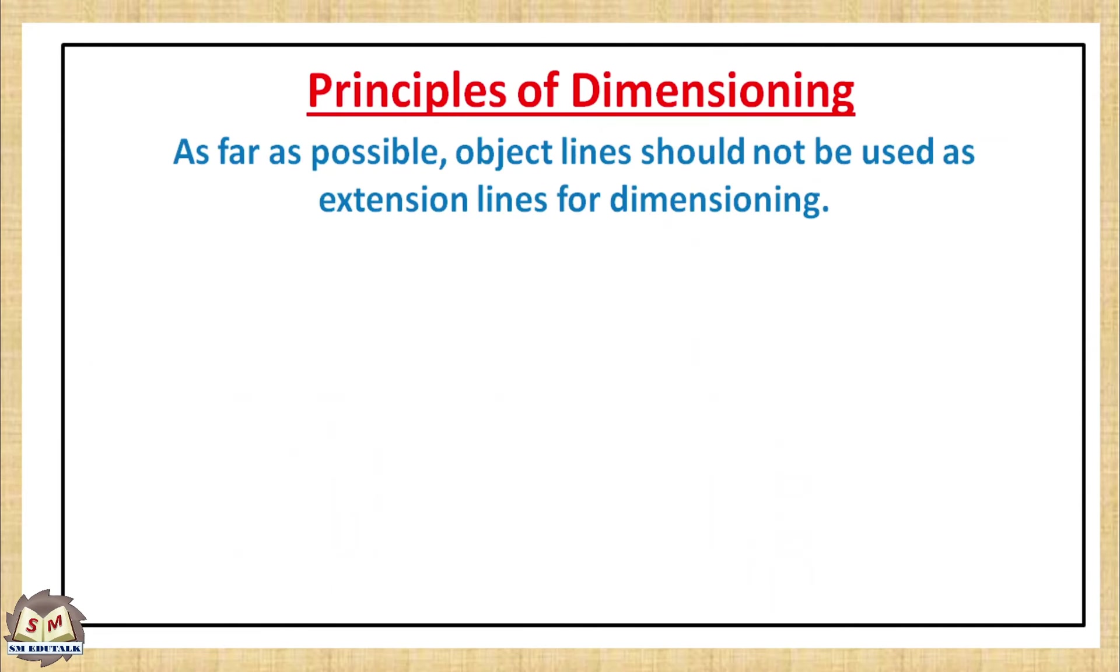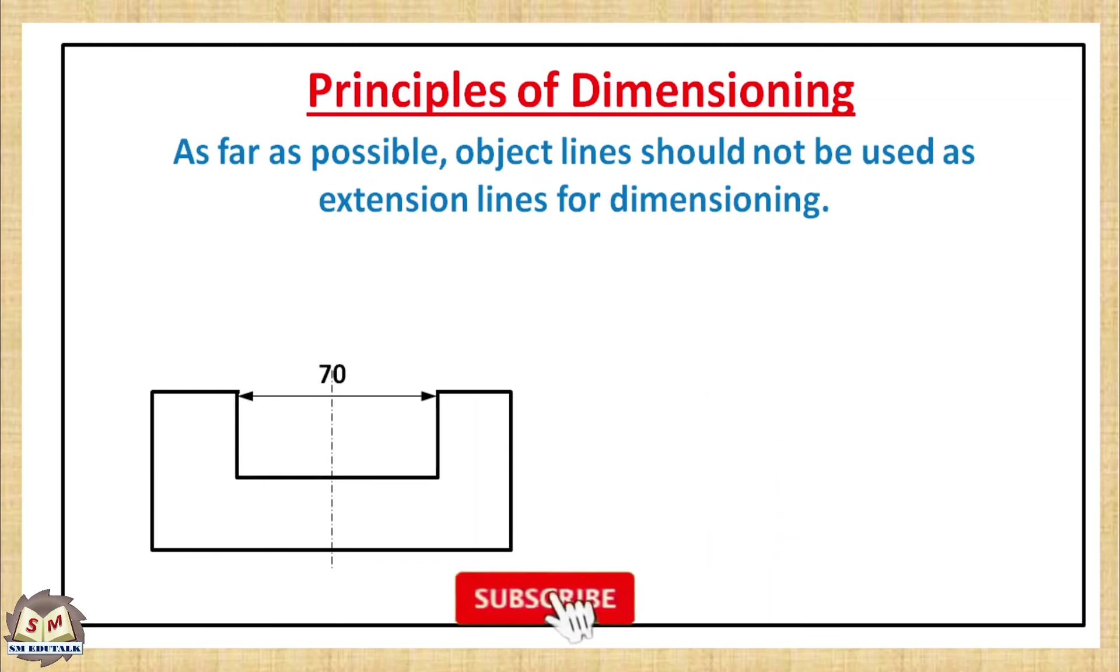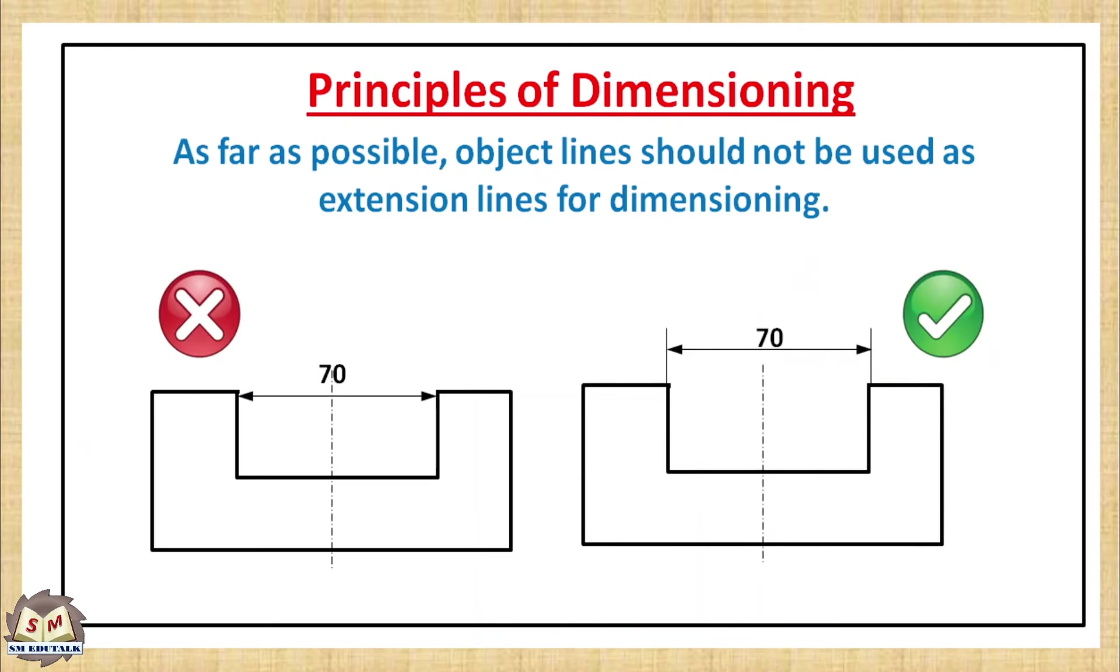As far as possible, object lines should not be used as extension lines for dimensioning. So here the width of the slot is given as 70mm. Here there is a dimension line which is used to dimension the width of the slot, but which doesn't use any extension line. Only the object lines are used as the extension lines here. That's why as per the principle this is wrong. To correct this, use two extension lines which are extended from the object line, and then a dimension line kept outside the object. Now this one is correct.